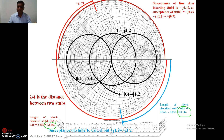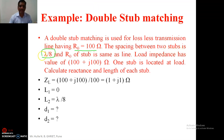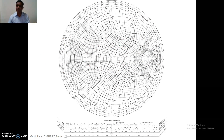Now I will show another example where the distance between the two stubs is a different value. This is example two: a lossless transmission line with a given characteristic impedance, and the spacing between the two stubs is λ/8. The stub characteristic impedance equals the line impedance. We normalize the load impedance, convert it to admittance, and proceed as before, finding the two key circles.